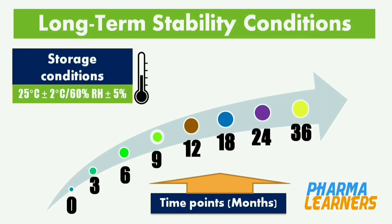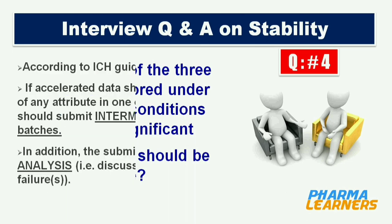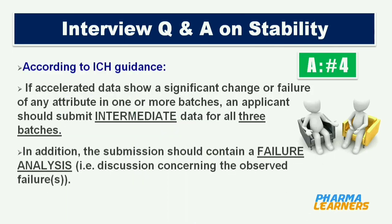Now the next question: if one out of three batches stored under accelerated conditions shows a significant change, what should be done? According to ICH guidance, if accelerated data show a significant change or failure of any attribute in one or more batches, an applicant should submit intermediate data for all three batches. In addition, the submission should contain a failure analysis — that is, a discussion concerning the observed failures.